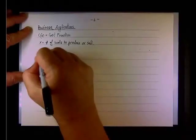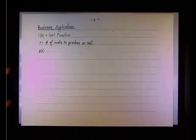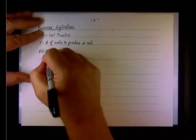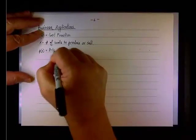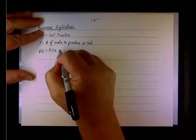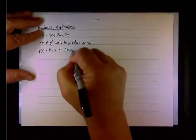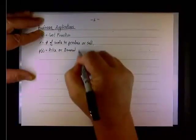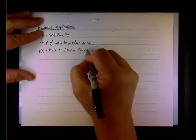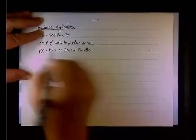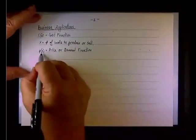P is the price function or demand. If the price is not fixed, a lot of times we call it a demand function. Why is that? Because at times, the price is a function of the quantity.